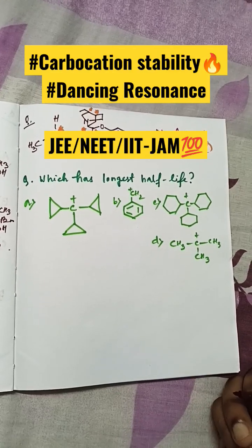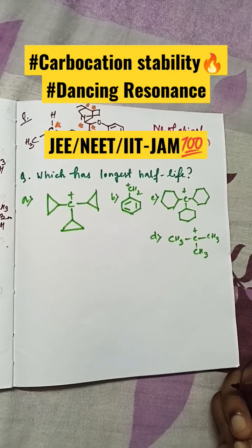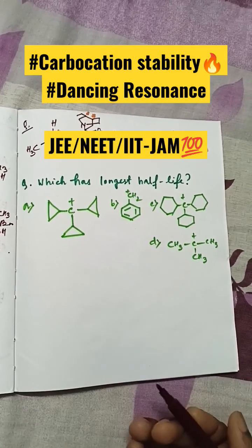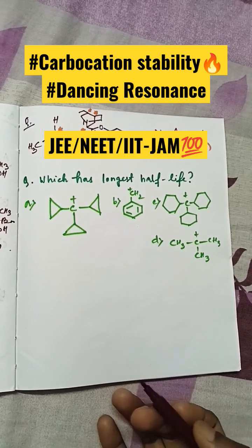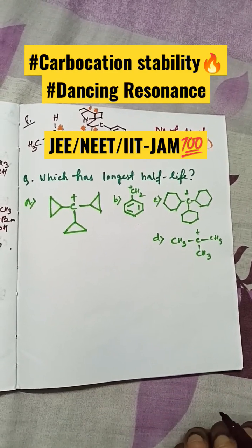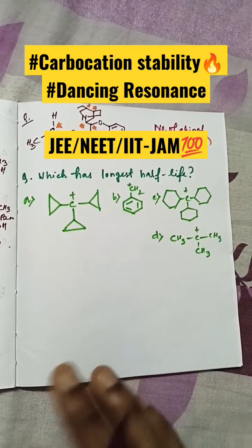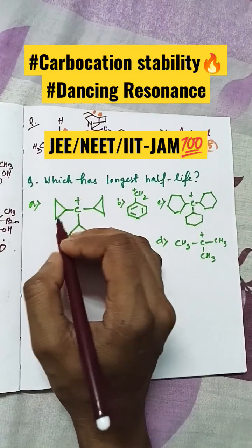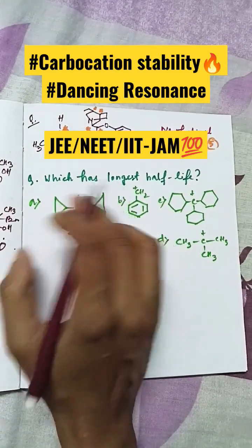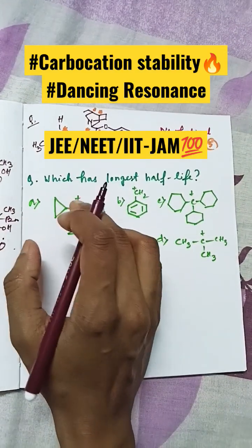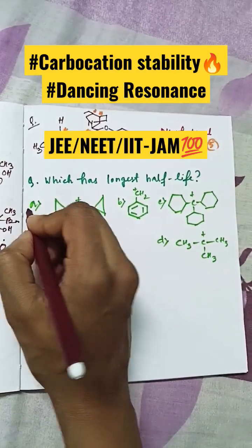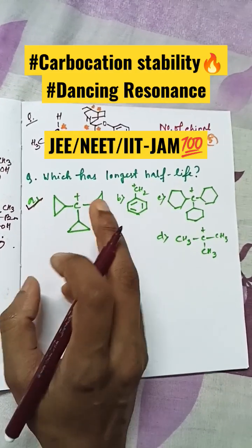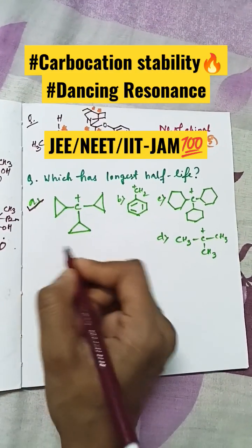The question is regarding which carbocation has the longest half-life, meaning which one is most stable. Always remember: whenever you see a cyclopropyl group attached to a carbocation, that carbocation is highly stable. Why? Because of...